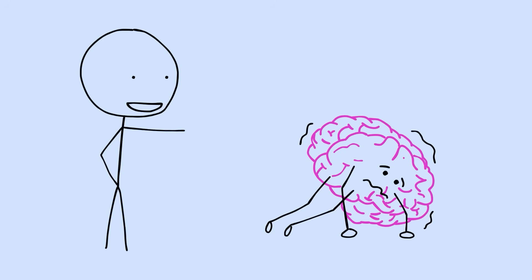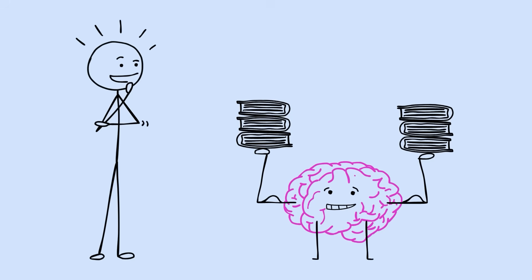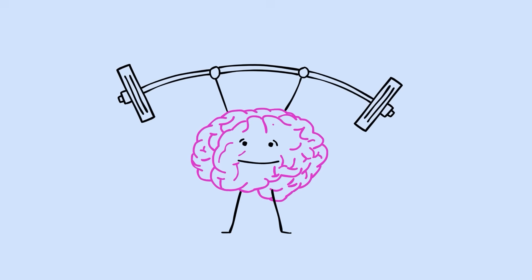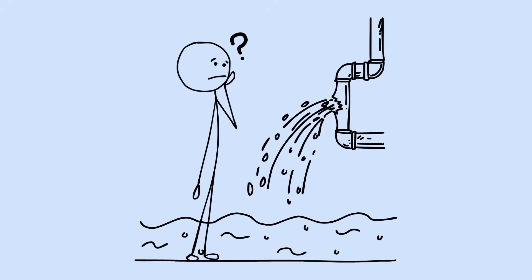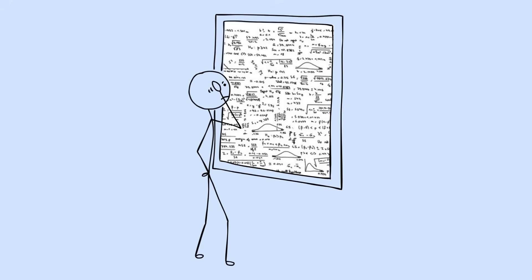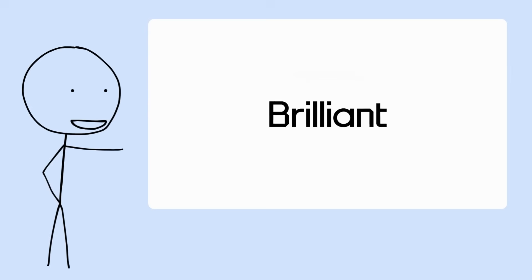Speaking of making your brain prove it, here's something that completely changed how I think about learning, and it connects perfectly to today's sponsor, Brilliant. You know how I just talked about active recall being like CrossFit for your memory? Well, I realized most of us were never taught how to actually think through problems. We just learned to follow steps and memorize formulas. That's exactly why traditional studying fails. This video is sponsored by Brilliant.